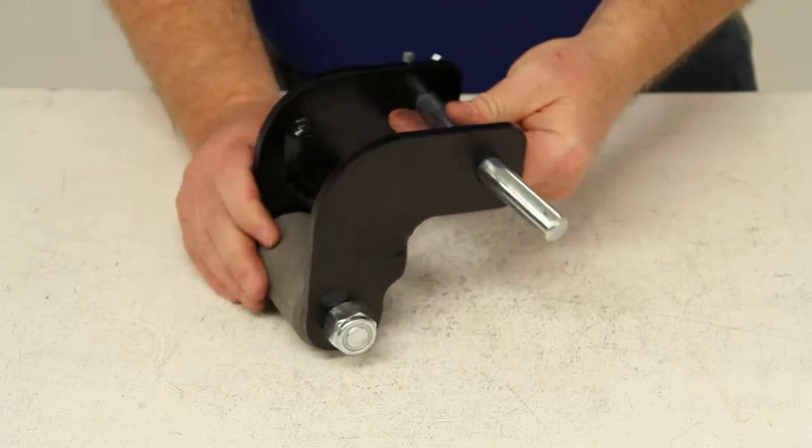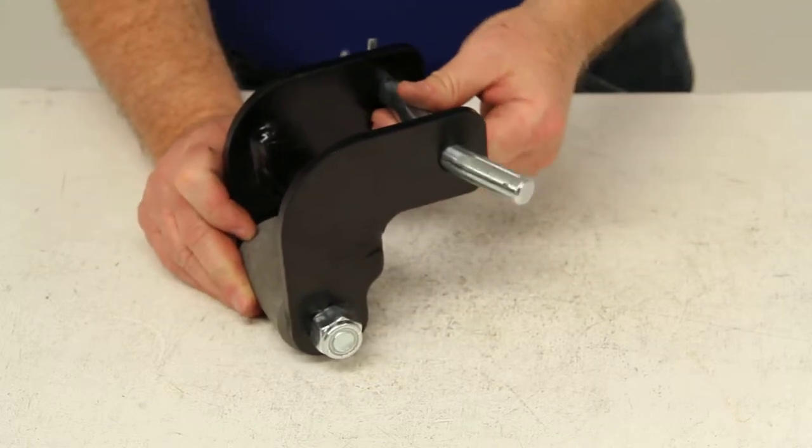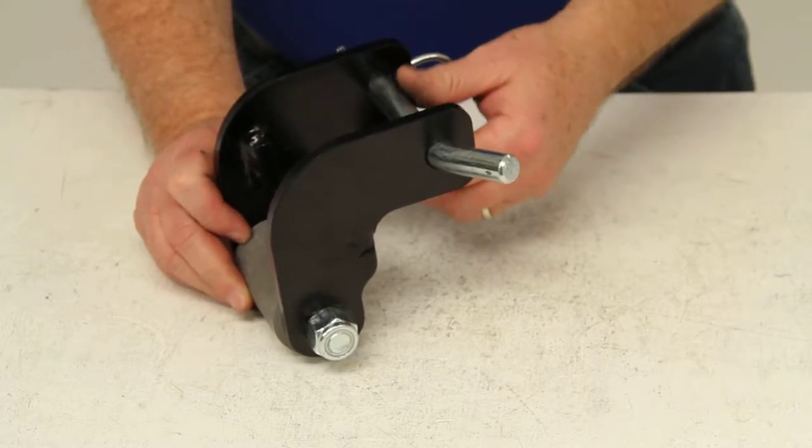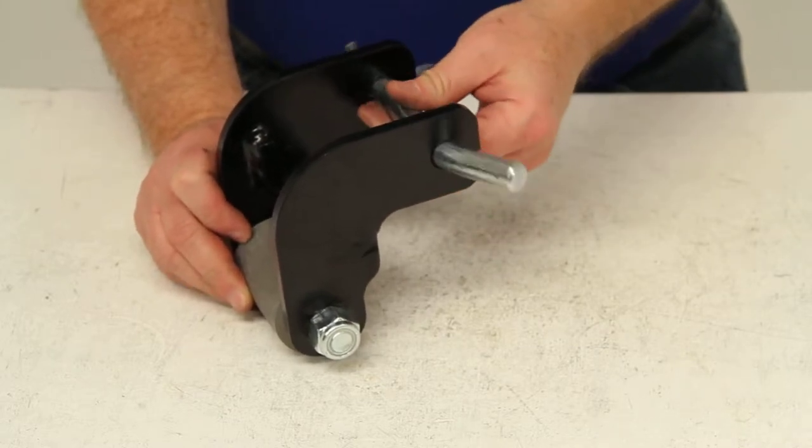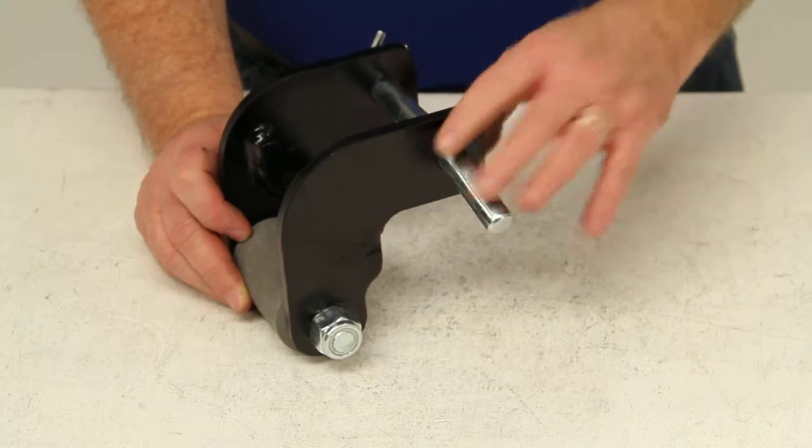And when installed on your hitch receiver, this will work with or without a ball mount or a hitch accessory inserted into your hitch. It does include the pin and the clip.